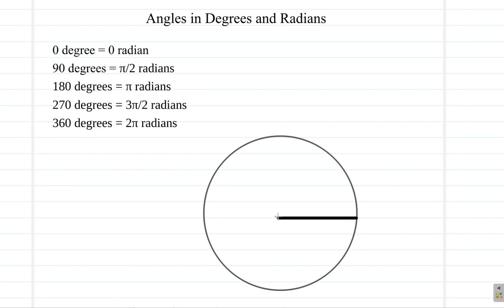Now suppose you have two of these radii. You have another radius here. You can see that the angle between here would be, remember, it's 90 degrees. Just as a reminder.